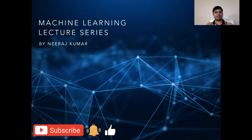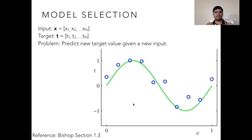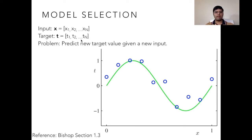Let's begin our discussion with model selection. As you might remember in the polynomial curve fitting problem, we had an underlying ground truth shown in the green curve, and we also had access to certain points sampled from this underlying curve. We are given a set of input-output pairs: inputs x1 to xn and outputs t1 to tn. Using these pairs, we want to fit a polynomial model that is a good approximation of the underlying sine curve, so that whenever a new input is presented, we can predict the target value with sufficient accuracy.